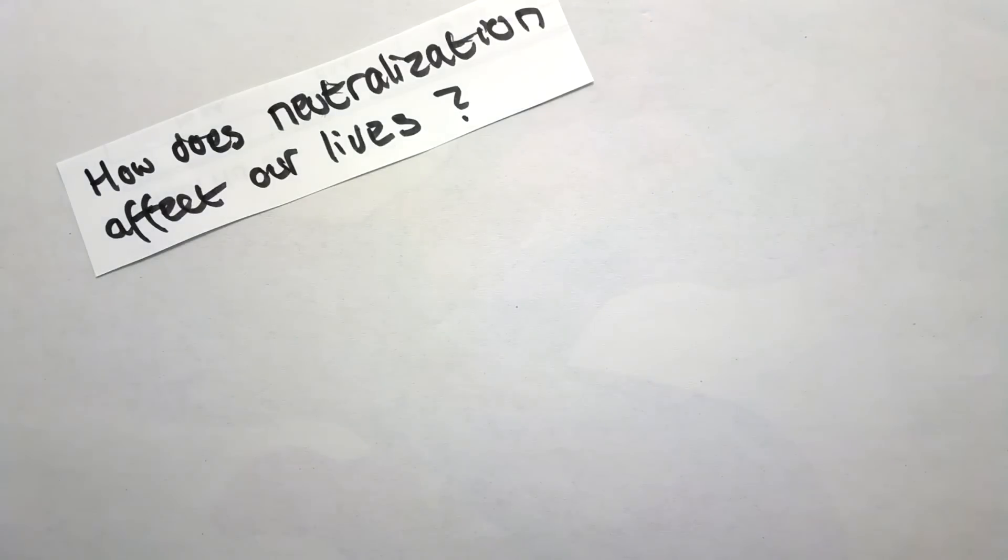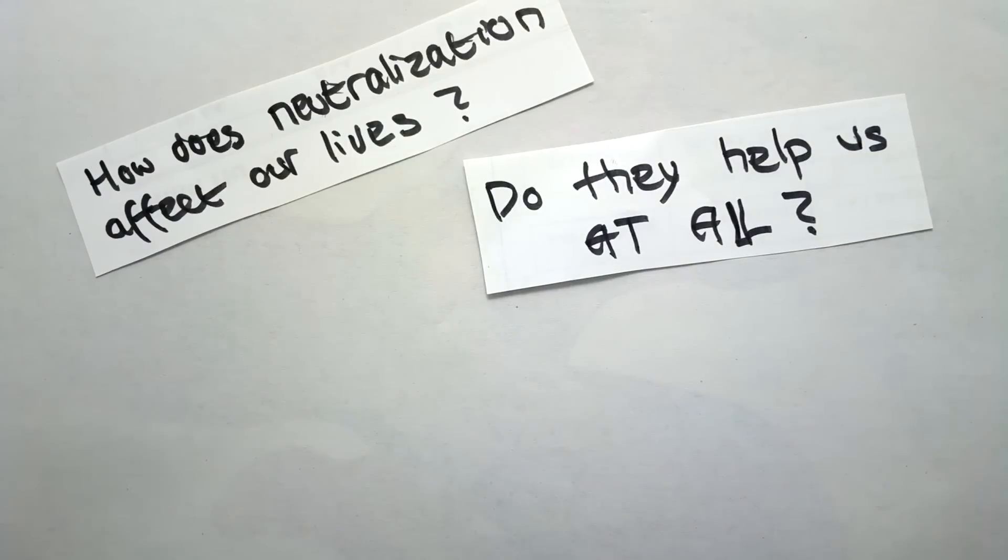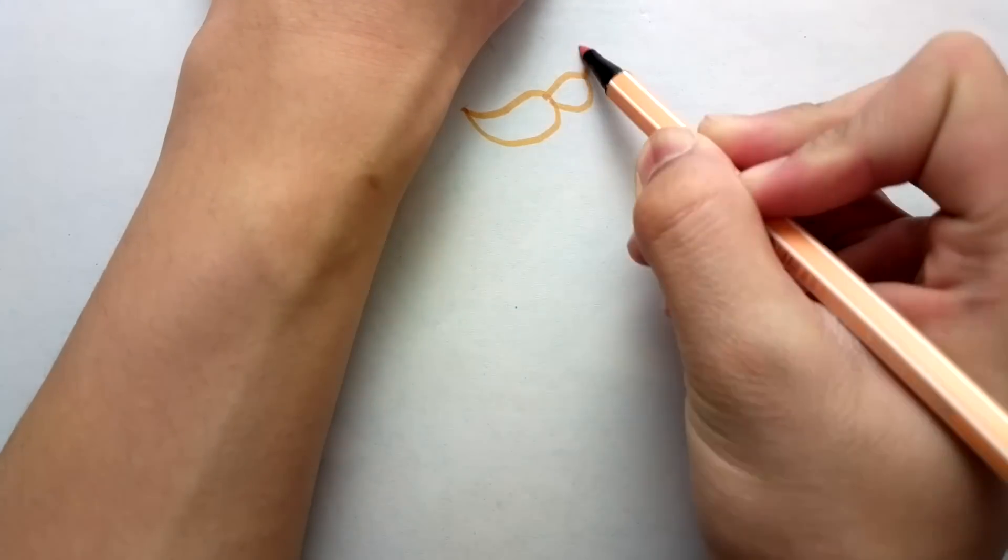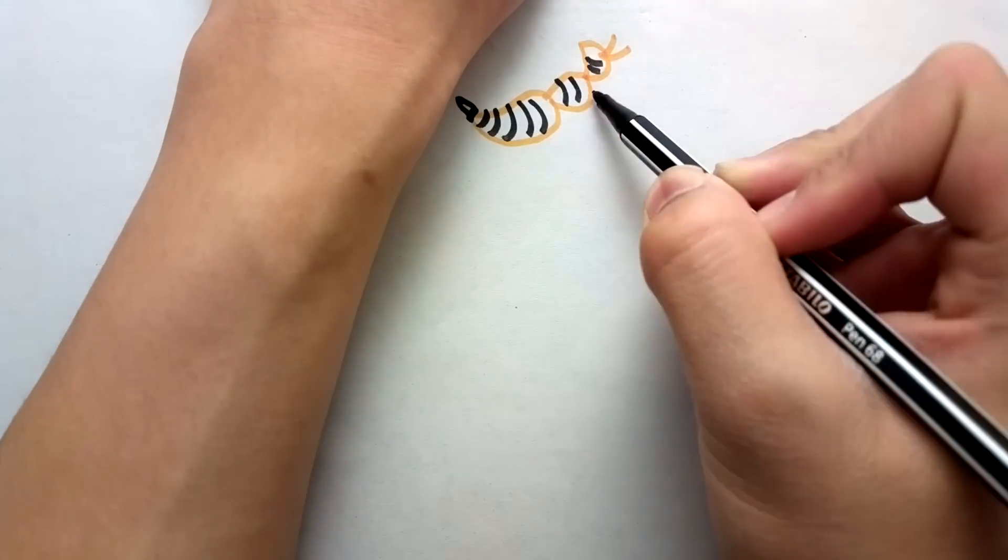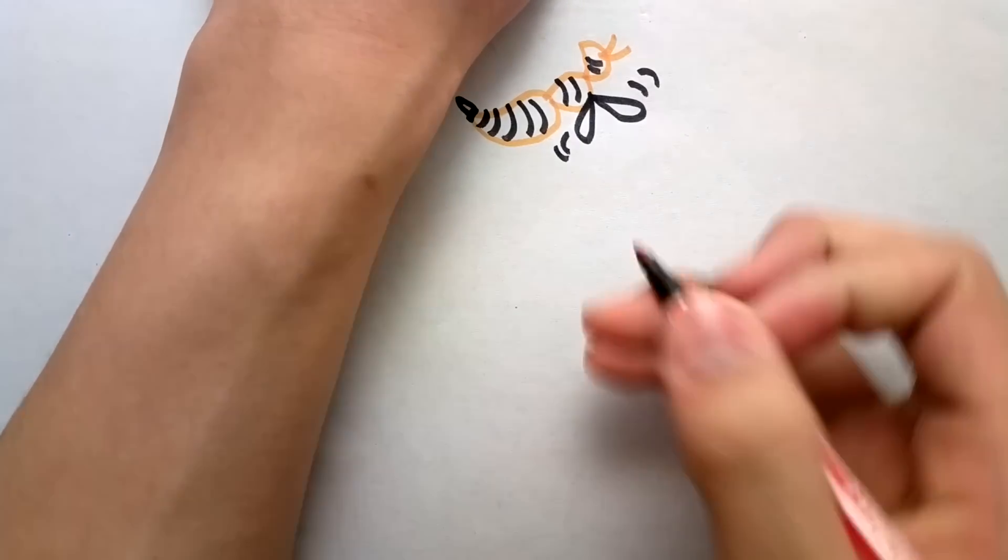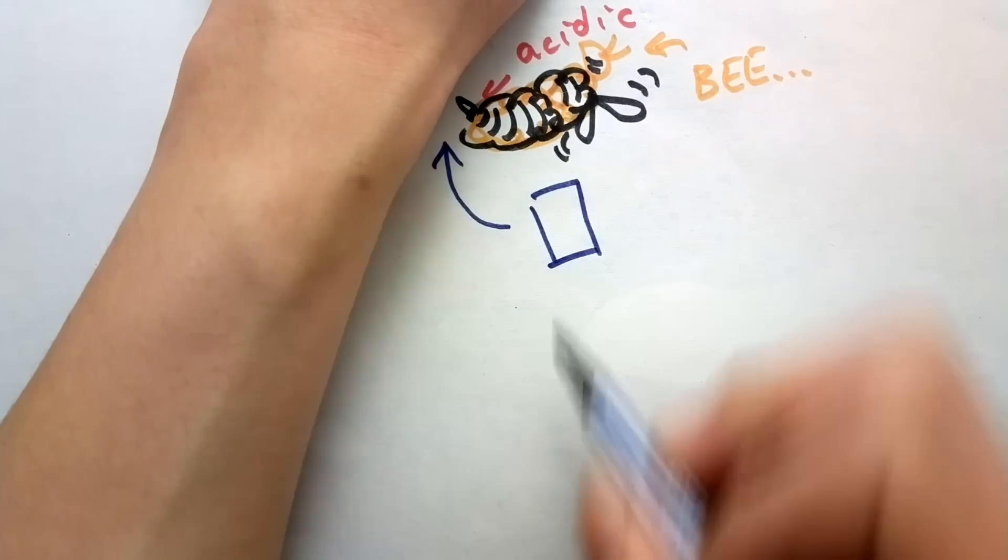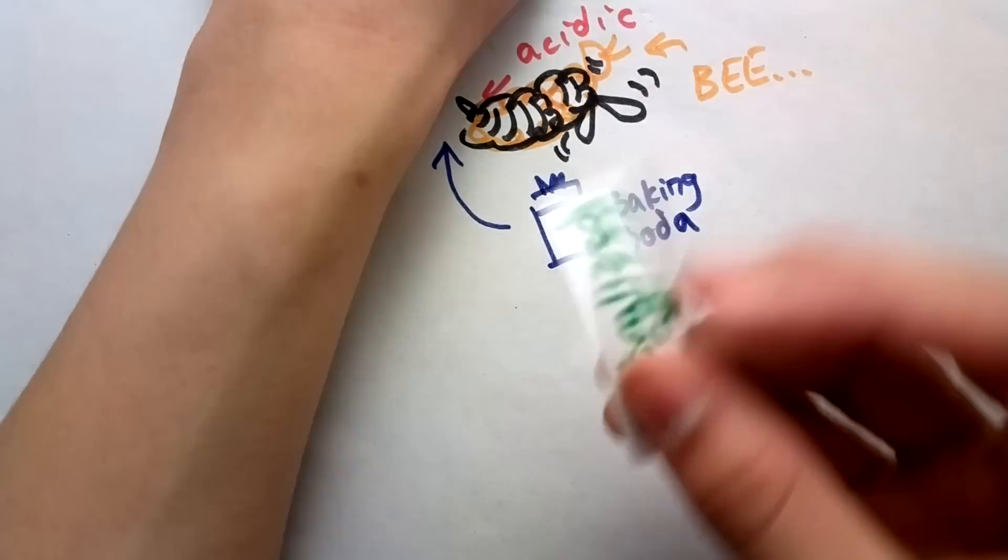Well, how does neutralization affect our everyday lives? Do they help us in any way? Well, in our everyday lives, we actually see pretty many neutralizations going on, like when a bee stings on the skin. It produces a mixture of acidic venom, and baking soda is applied on the skin for relief. Therefore, neutralization takes place.